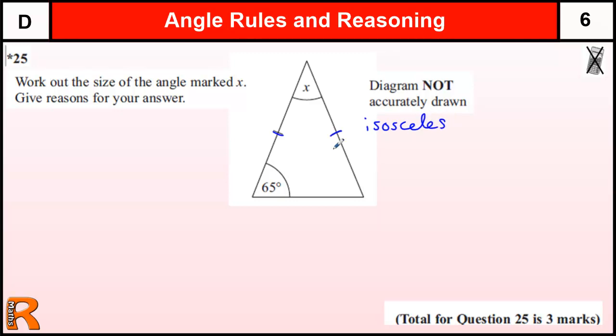And that tells us that this angle is 65. OK, so our first reason is we're going to call that angle A equals 65 because isosceles triangle.